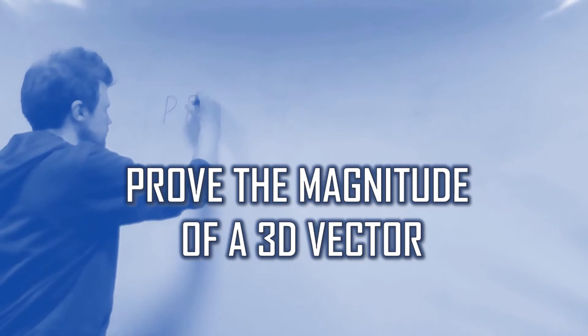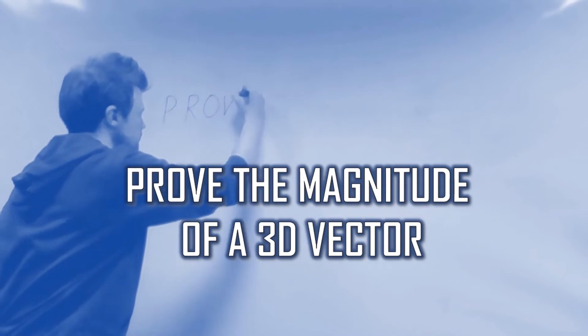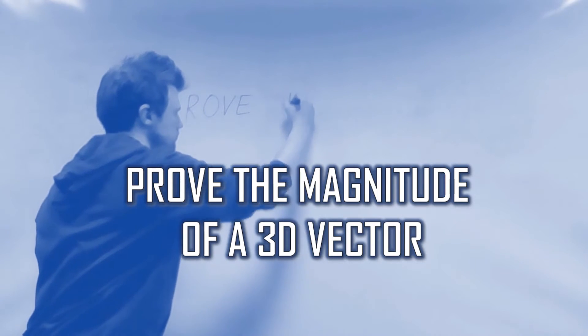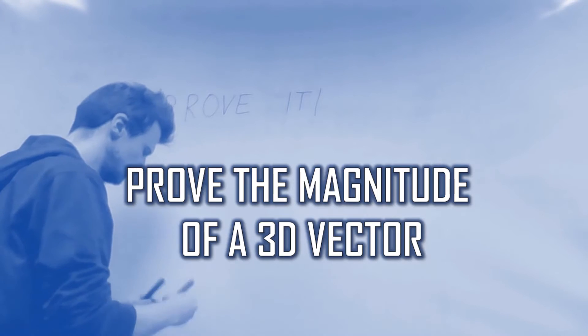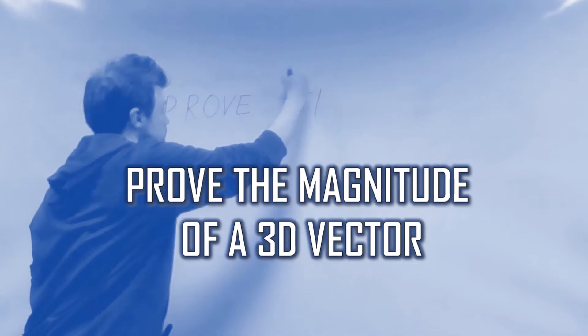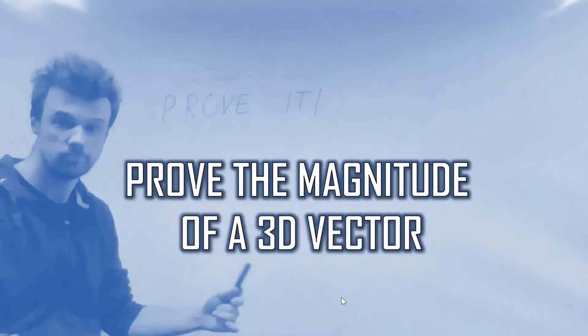Hello! Welcome to today's installment of Prove It, where we're going to be looking at proving what the magnitude of a 3D vector is, and hopefully showing that it's pretty much just Pythagoras in 3D. So what do I mean by that? Well, I'm talking about if you have the vector A, where A is X lots of I, plus Y lots of J, plus Z lots of K.